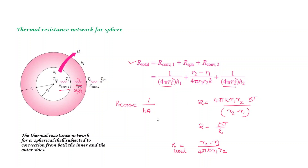The convection resistance formula is 1/(h·A), where the area for the inner surface is 4πr1² and for the outer surface is 4πr2². You can substitute the total resistance to calculate the overall heat transfer rate: Q = ΔT / R_total. Since area varies with radius in a sphere, you substitute the appropriate area for each resistance term.